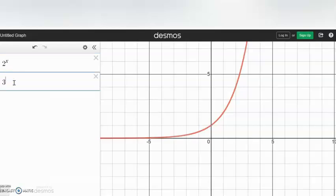So how about if the base is 3? The base is 3. As you would guess, it still goes through 0, 1. Anything to the 0 power, except 0, is 1.